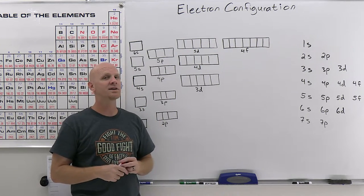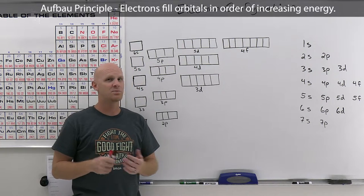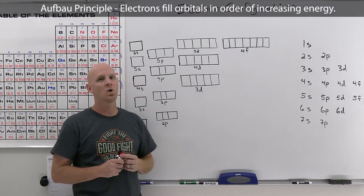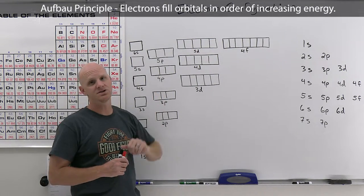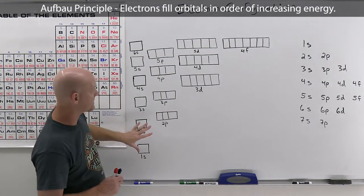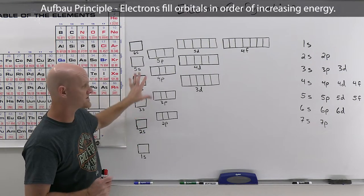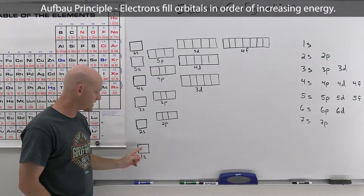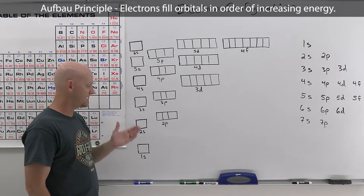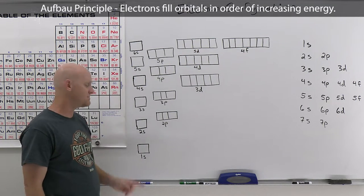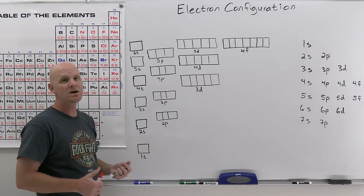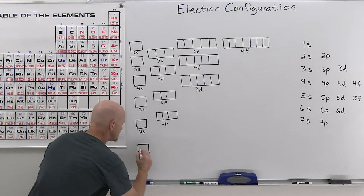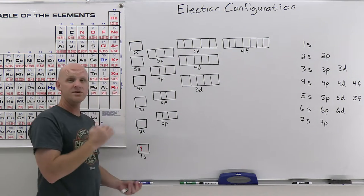The first rule is the Aufbau principle, which says that electrons fill in the lowest energy orbitals first, then work their way up in energy. The orbitals are organized in order of increasing energy. The lowest energy orbital is the 1s, so the first electron in an atom would go in the 1s orbital. It doesn't matter if you do spin up or spin down first — either is totally fine.